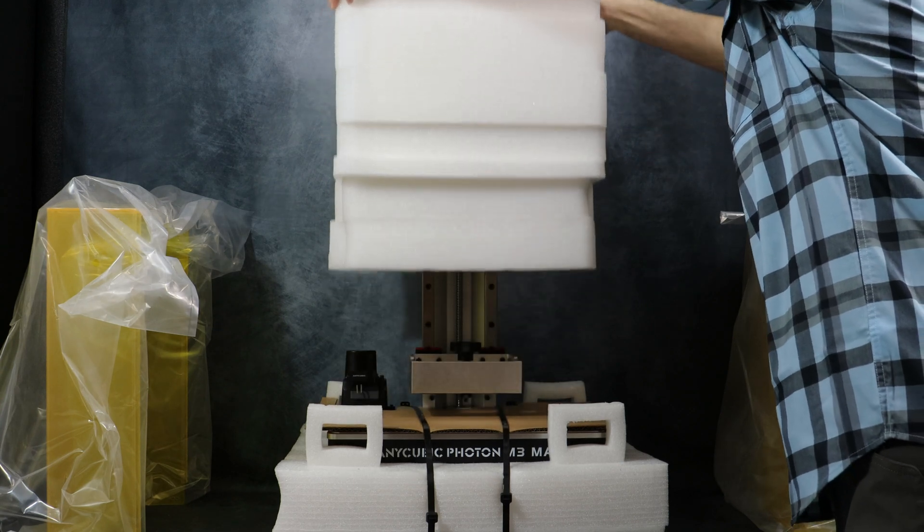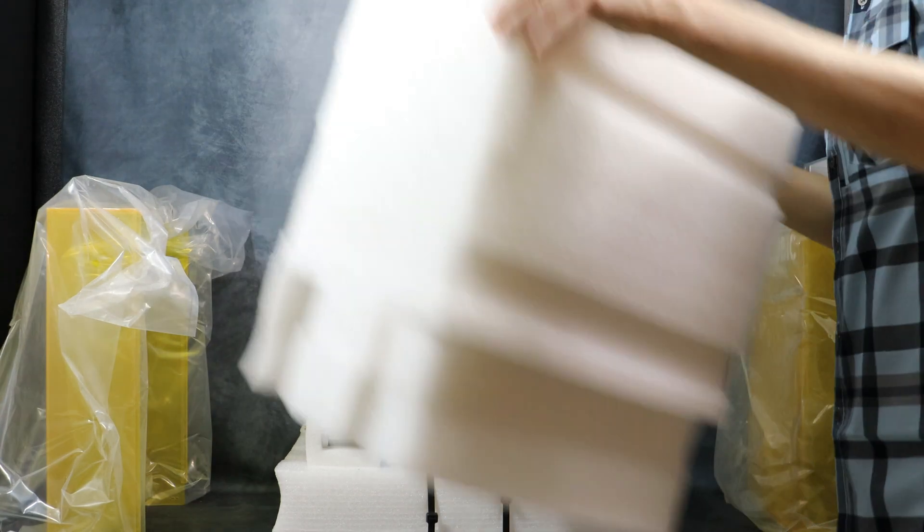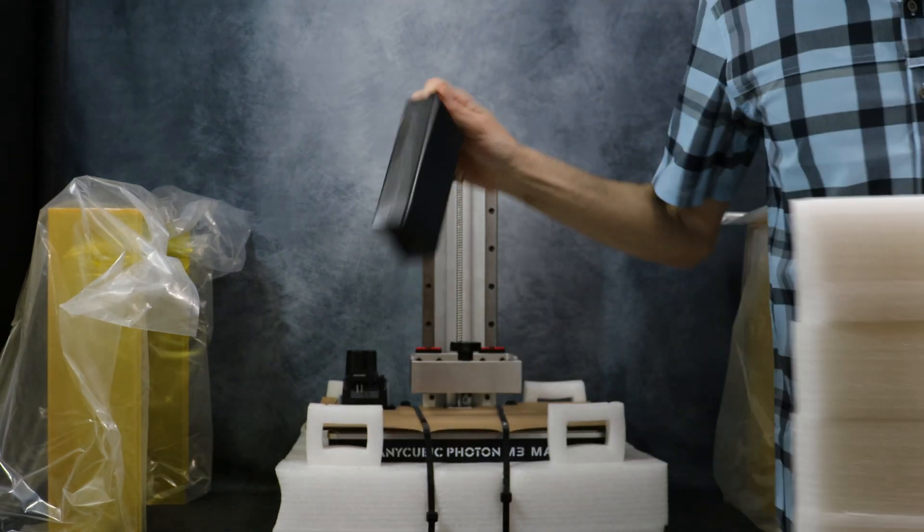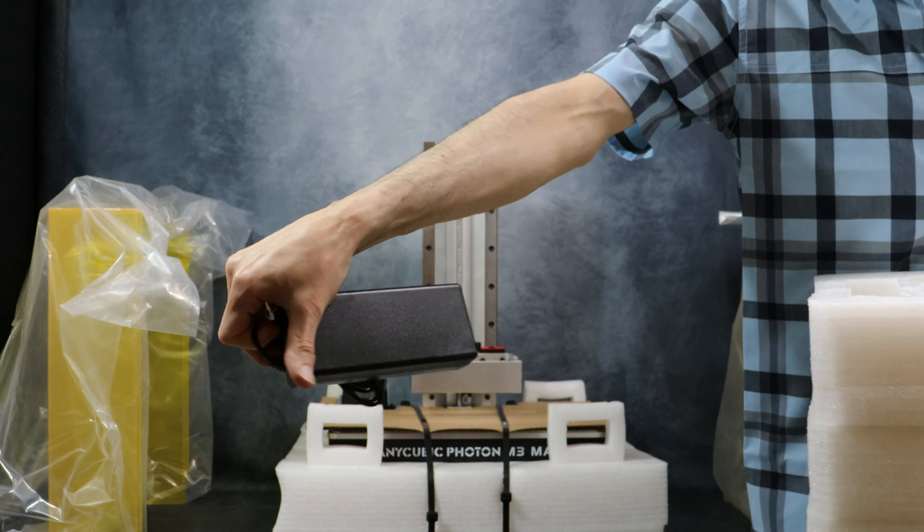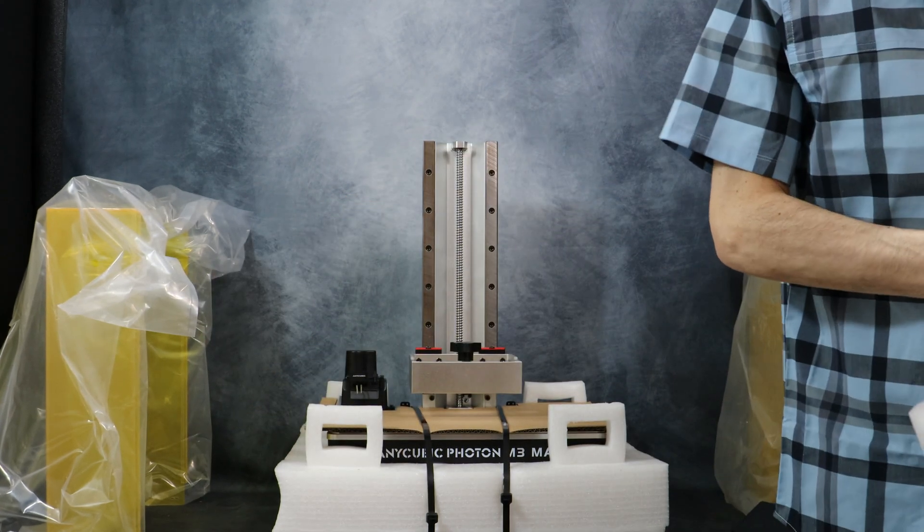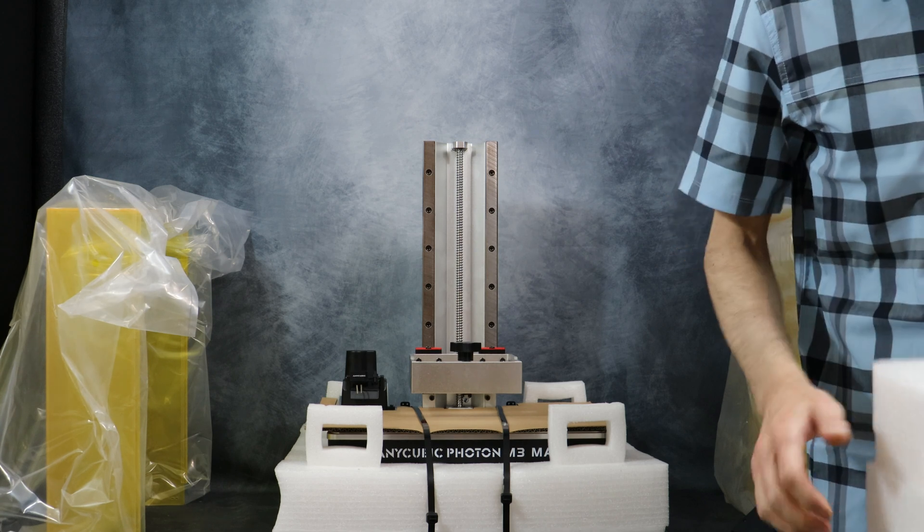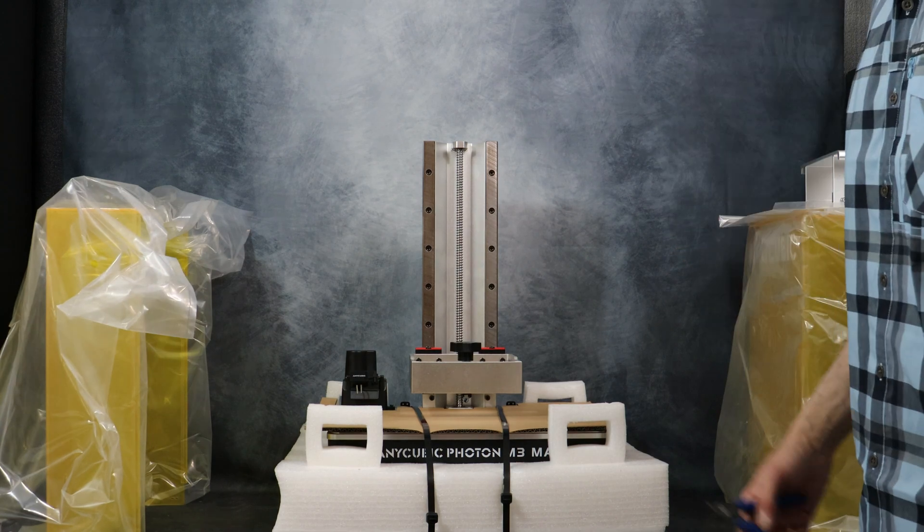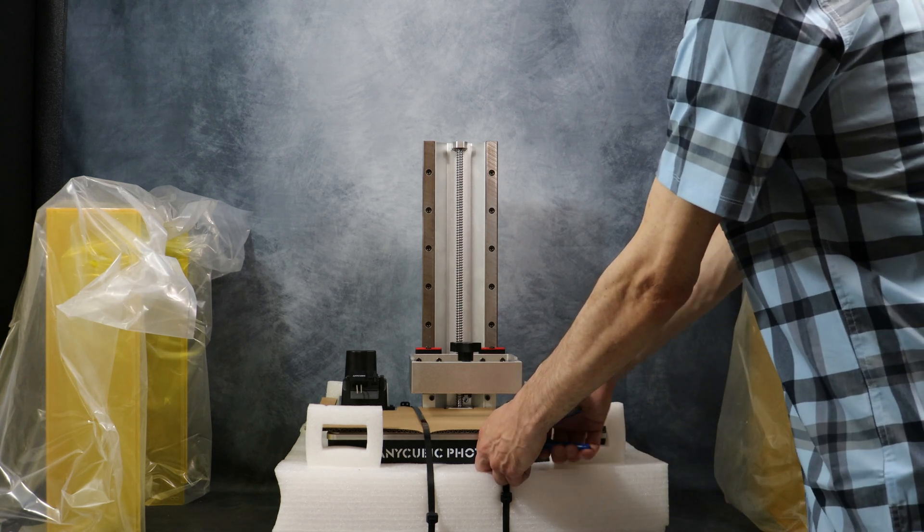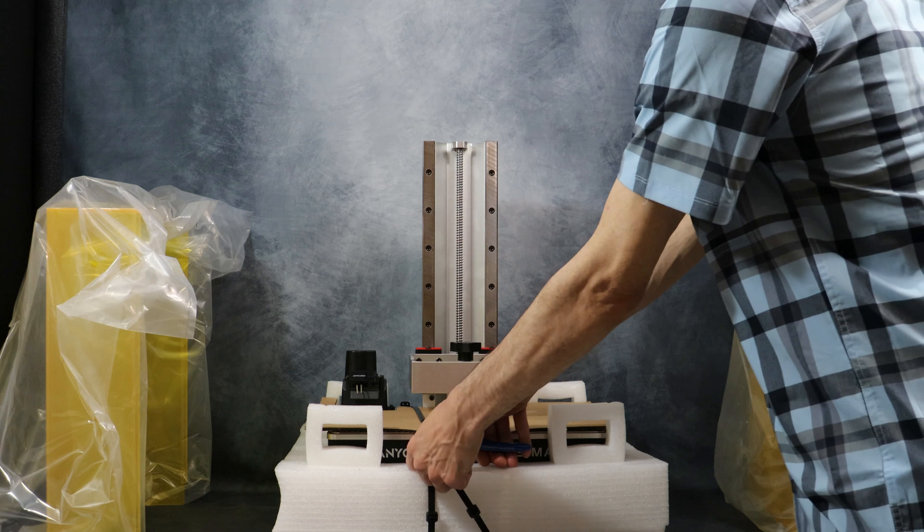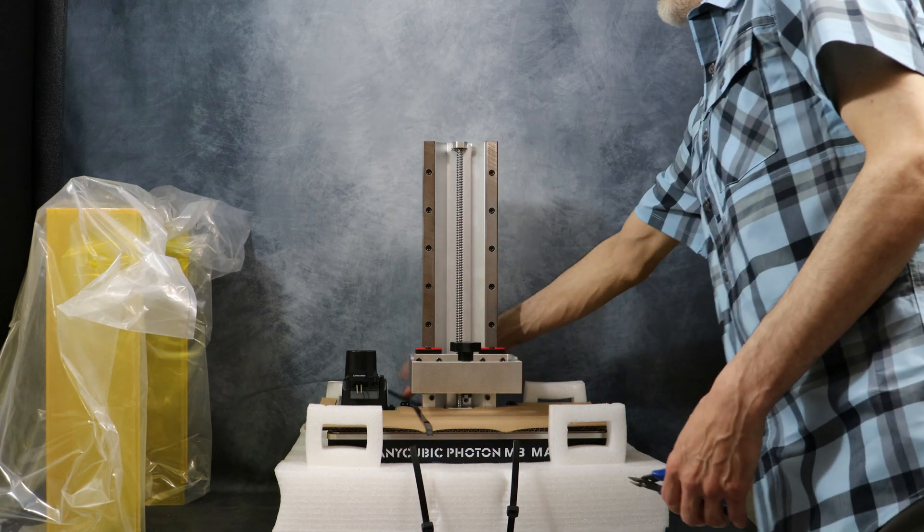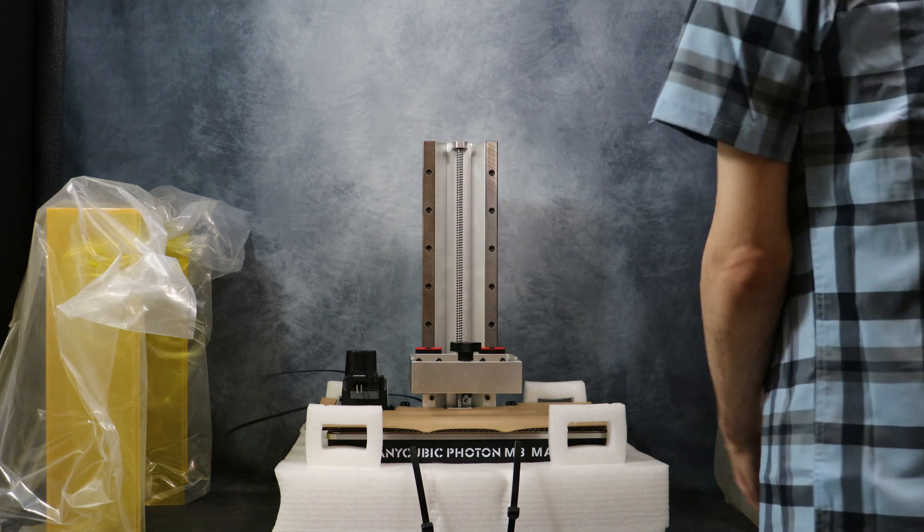Next thing we can do is remove this foam. We'll get this out of the way and get the printer out of the base. Here we have also the power supply. Next we're going to cut the zip ties holding the printer down into the bottom foam piece. We're going to get those out of the way and then carefully remove the cardboard that's sitting on top of the print platform.